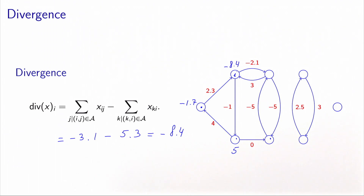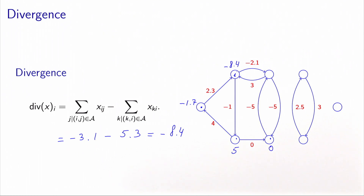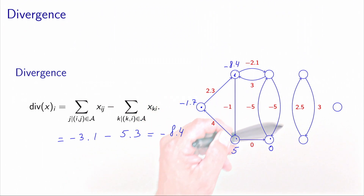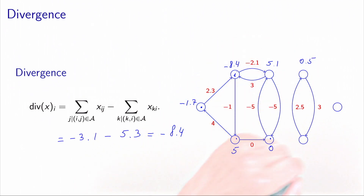If we take this node here, the total flow going out is minus 5 using this arc, and the total flow entering is minus 5 plus 0, which is minus 5 as well. So the total divergence here is 0. This node is not generating or absorbing any flow — the flow is just transiting through it. Continuing for all nodes, we would have 5.1, 0.5, minus 0.5, and 0.